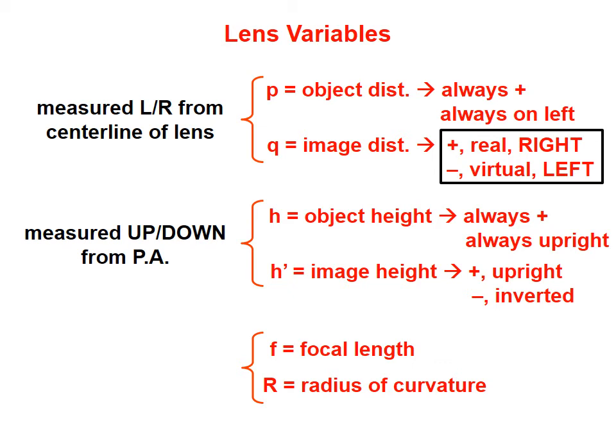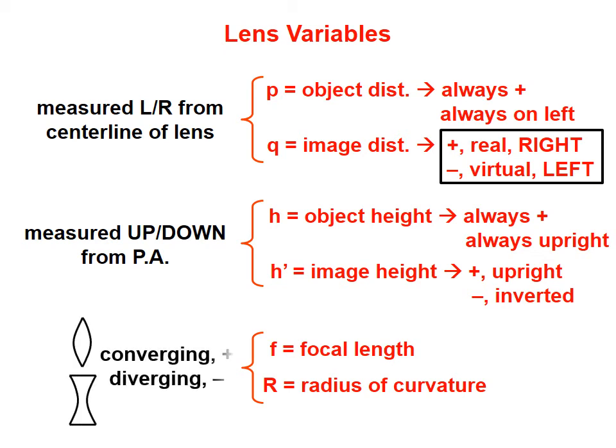H is the object height and H prime is the image height. These are measured up and down relative to the principal axis. In these lessons, the object height H will always be positive — the object will always be upright. And as with mirrors, H primes that are positive indicate upright images, and H primes that are negative are inverted images.